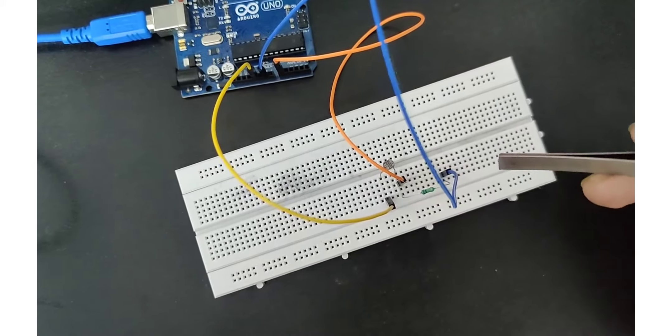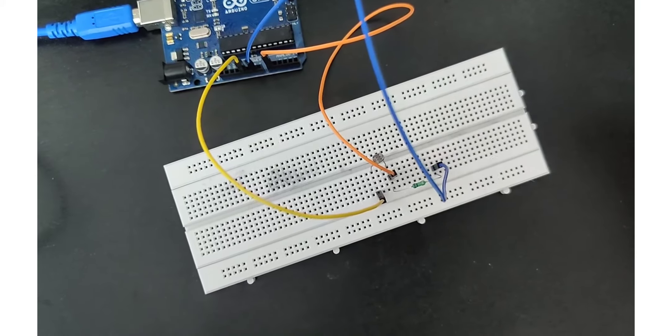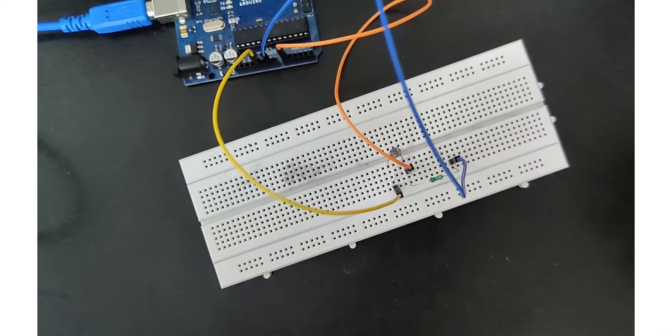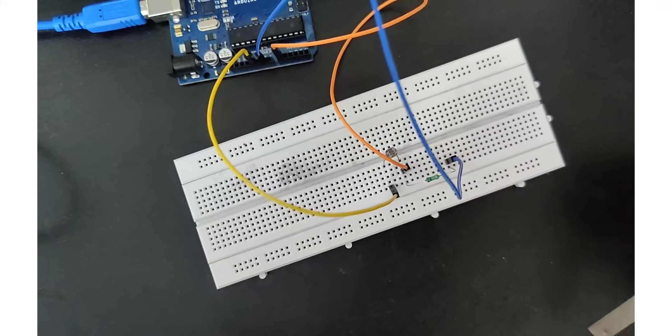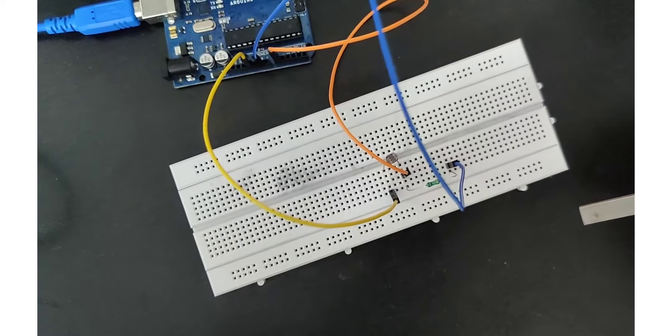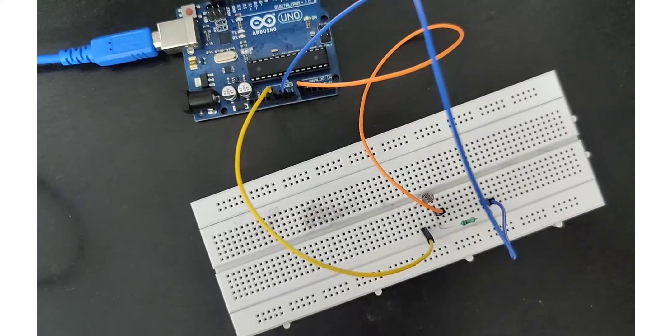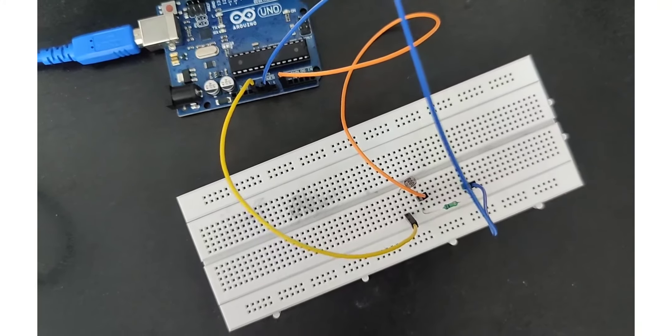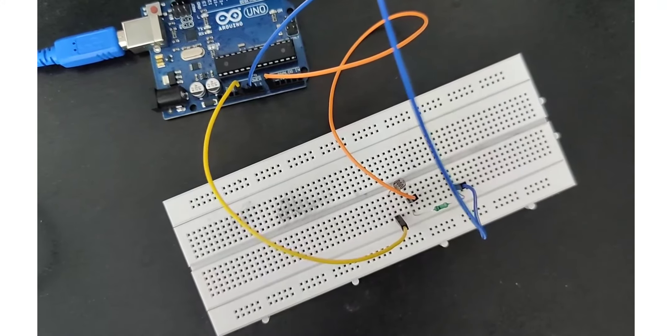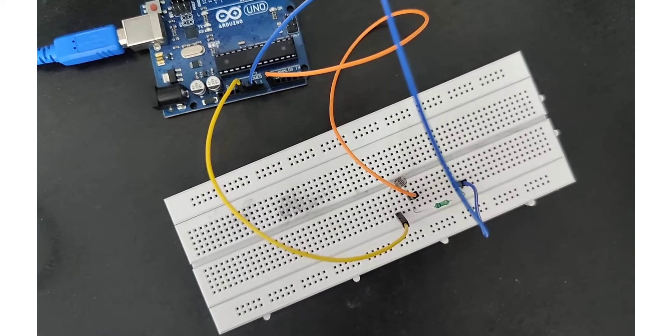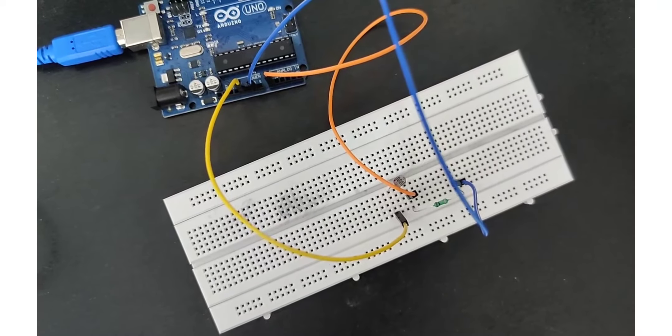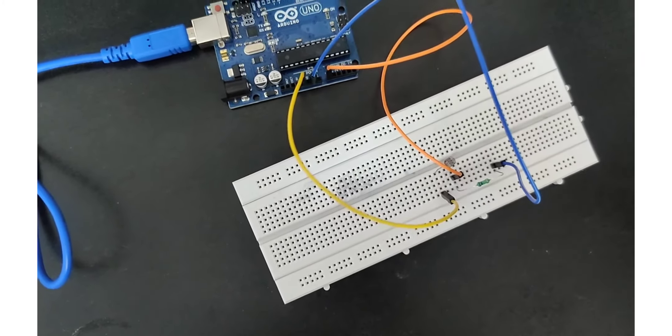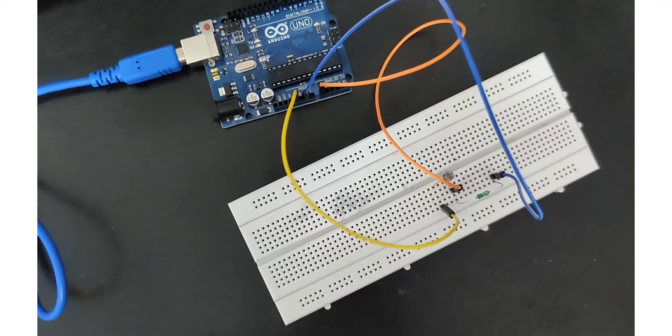The LDR is also called a photoresistor or cadmium sulfide cell. It works on the principle of photo conductivity. This passive component is basically a resistor, but its resistance value changes according to the intensity of light. When the light intensity decreases, the resistance also decreases, and that's how it works.